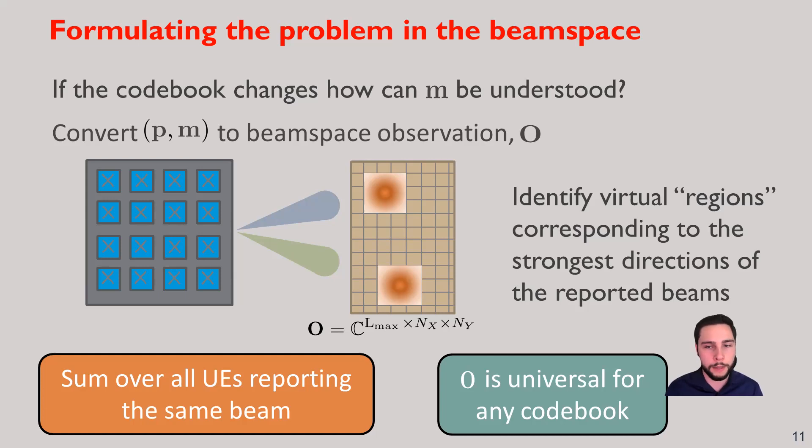This is how we incorporate domain knowledge into the neural network. We know how the array response acts, and so we can project whatever beams are selected as the strongest beams for the users. We can identify the regions that those cover in a virtual space, and we can ignite these based on how strong the RSRP is. We're going to be summing it up over all UEs that report the same beam. The idea here is that we don't want our input dimension to change with the number of users. This beam space observation, which we're going to call O, is universal for any codebook. If you change what a beam pattern looks like, it still translates to a consistent pattern in the observation.